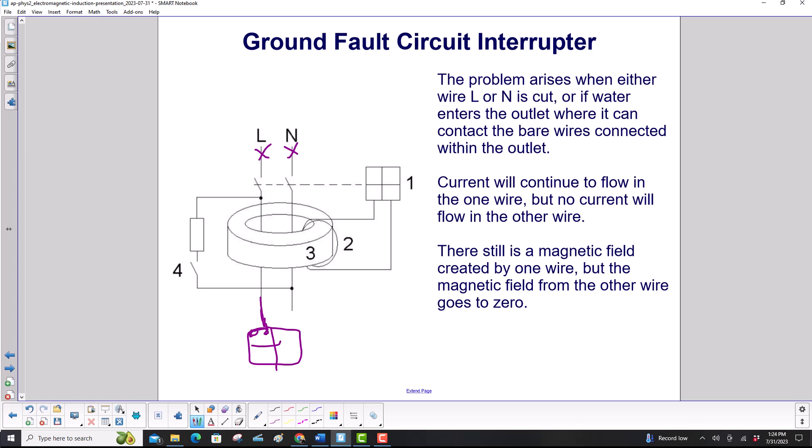And sadly, what happens then is somebody's touching it. That current will flow through the person into the ground. So you'll still have current flowing here, generating a magnetic field, but there's no current being returned. So this magnetic field could possibly increase if you're drawing a lot more current. And over here, there's no magnetic field generated. It goes to zero. So what's going to happen now?